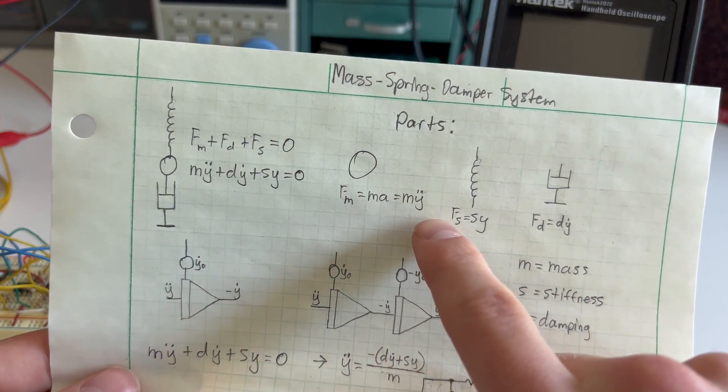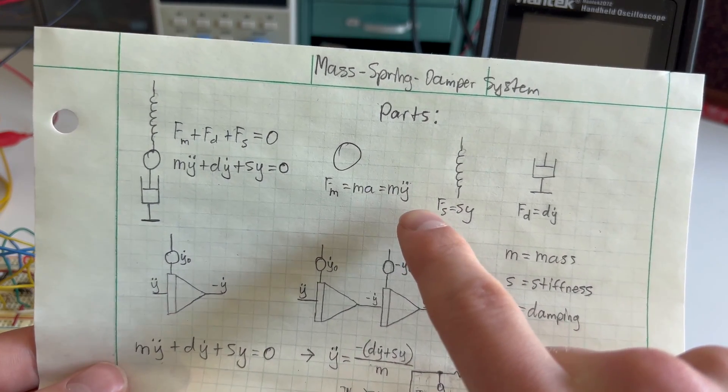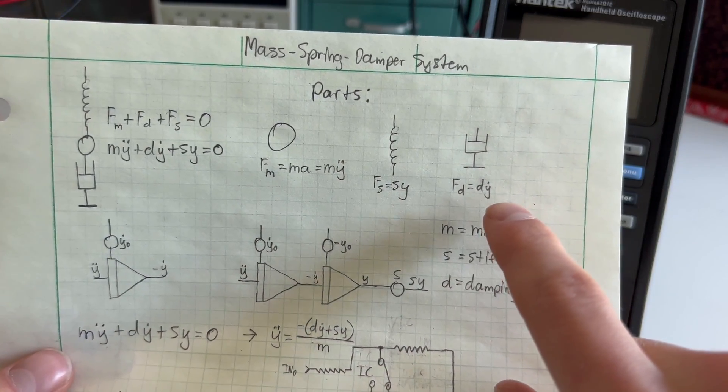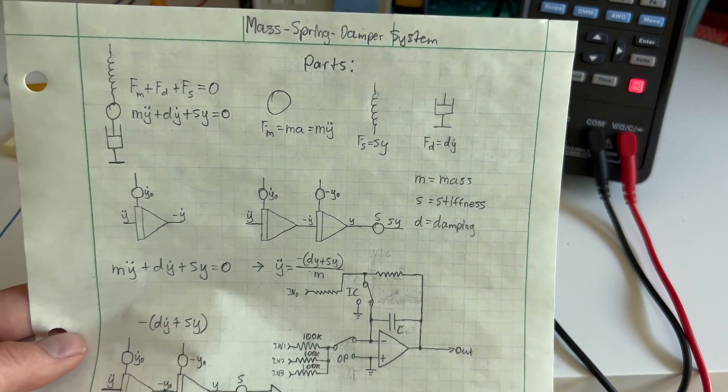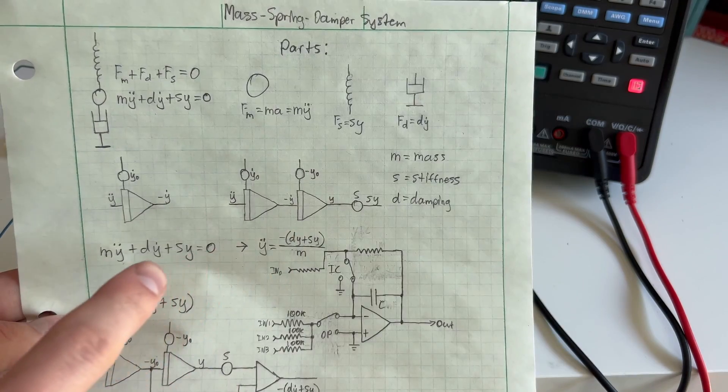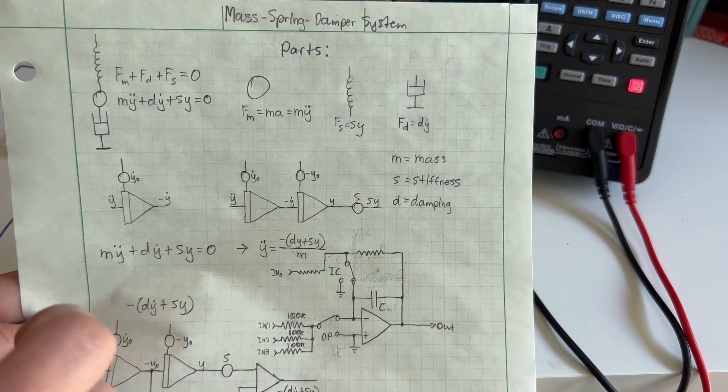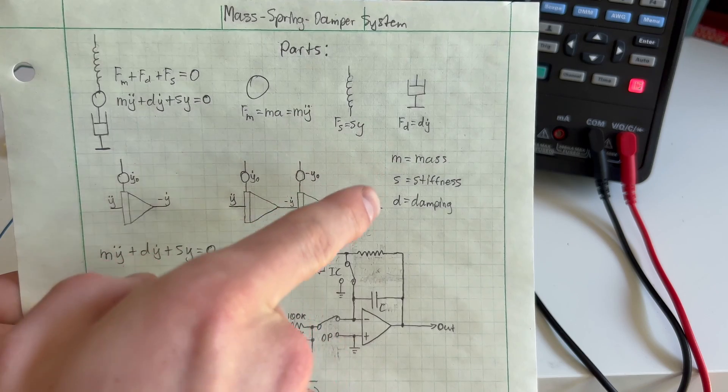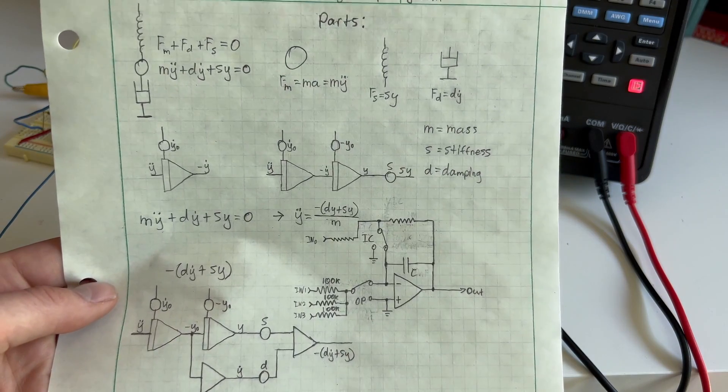So in this case, acceleration is equated to the second derivative of distance. And the first derivative of distance is speed, basically. And so using some integrator, some components here, we can model this equation, the mass, the stiffness, and the damping, by some electronic components here.